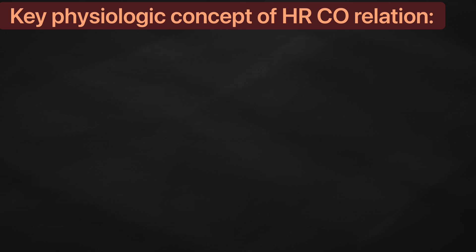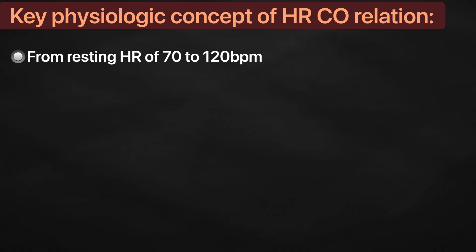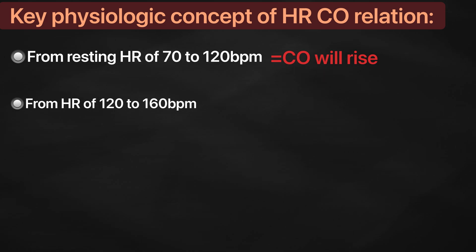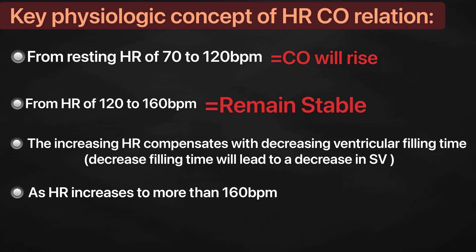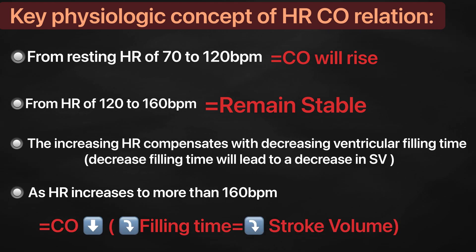Consider this phenomenon in a healthy young individual. Initially, as heart rate increases from resting to approximately 120 beats per minute, cardiac output will rise. As heart rate increases from 120 to 160 beats per minute, cardiac output remains stable, since the rate increase is offset by decreasing ventricular filling time and consequently stroke volume. As heart rate rises above 160 beats per minute, cardiac output decreases as stroke volume falls faster than the increasing heart rate. Therefore, individuals exercising aerobically are cautioned to monitor their heart rate to stay within the target range of 120 to 160 beats per minute in order to maintain cardiac output.